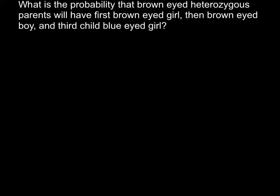So here is my explanation. We are given an order here, which makes this problem very easy to solve — much easier than those problems where order is not given. Our order today is: first, a brown-eyed girl; second child is a brown-eyed boy; and the last child is a blue-eyed girl.